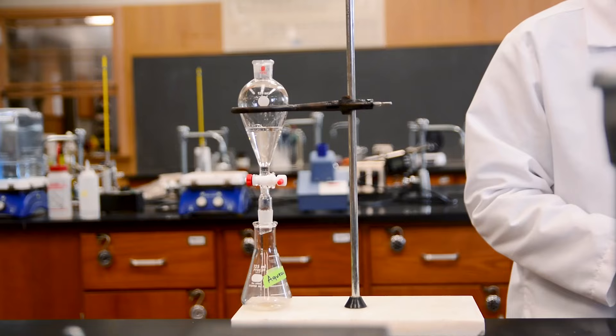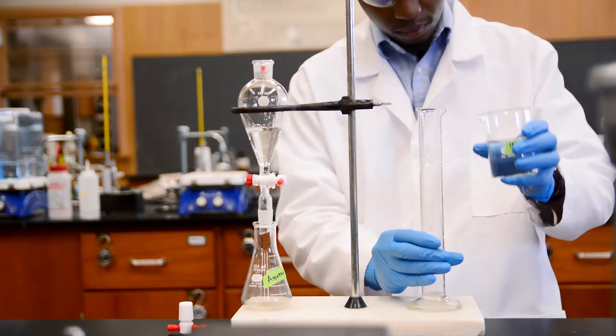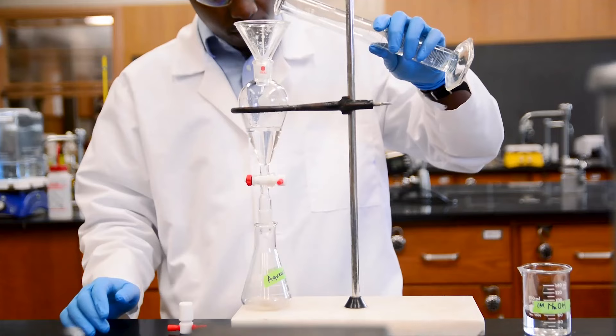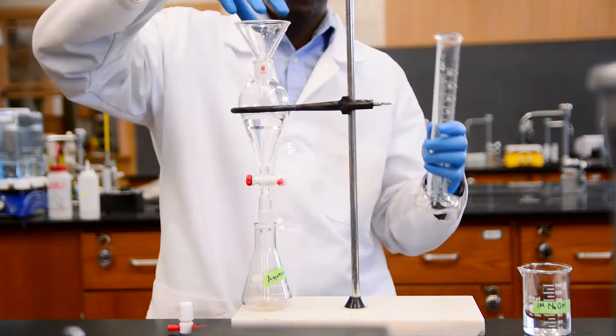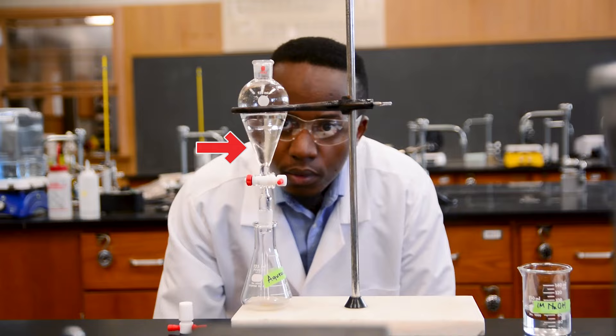To separate benzoic acid from the mixture, we will add 30 milliliters of 1 molar sodium hydroxide to the separatory funnel. This will pass through the organic layer, react with benzoic acid on the way to form sodium benzoate, and drag that down to the newly forming aqueous layer on the bottom. To make sure the reaction goes to completion, we need to mix the contents of the funnel.